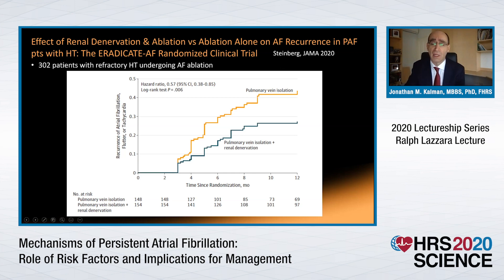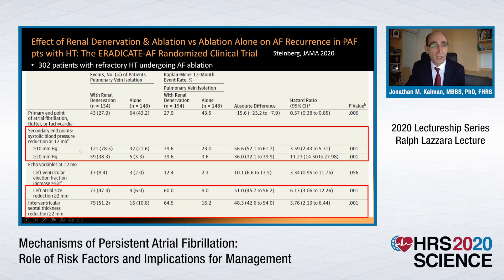Very recently, John Steinberg and colleagues published the ERADICATE AF randomised clinical trial, looking at patients with refractory hypertension and atrial fibrillation randomised to ablation alone or ablation plus renal denervation. Outcomes were significantly better in those who received renal denervation compared with pulmonary vein isolation alone. This was associated with significant improvements in blood pressure — 10 to 20 millimetre greater reduction in the renal denervation group — and translated into reverse structural remodelling: left atrial dimension reduced by more than two millimetres and interventricular septal thickness also reduced.